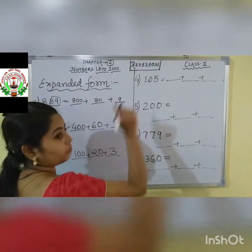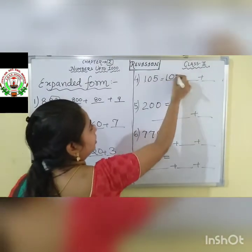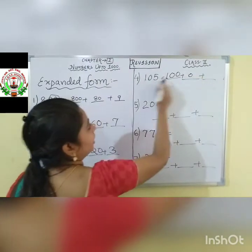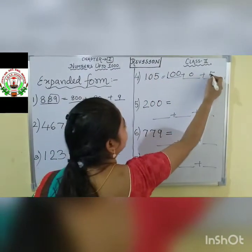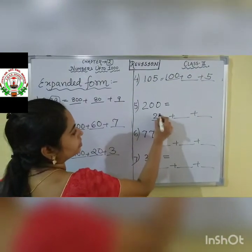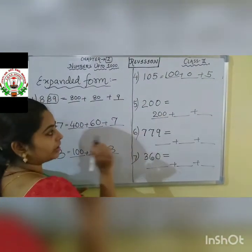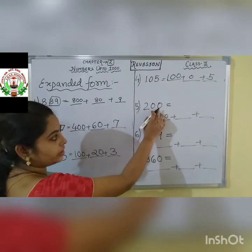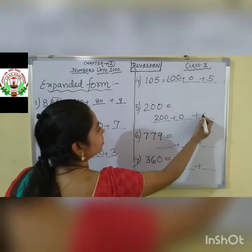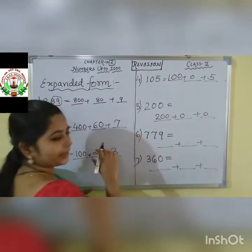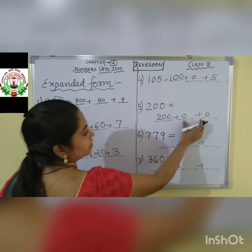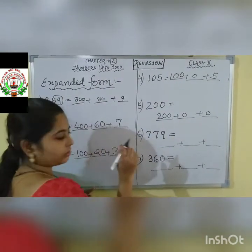Next: 105. 100. And nothing is given in the tens place — put 0. And the last number is 5. So 105 = 100 + 0 + 5. Next: 200. That means 200, then see clearly — 0 and 0 are there in tens and ones place. So write down 0 in the next two blanks. Nothing is given in tens and ones place, so put 0 in the next two blanks.